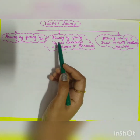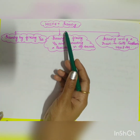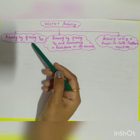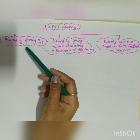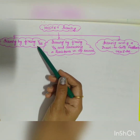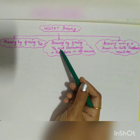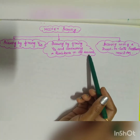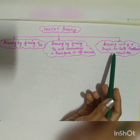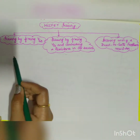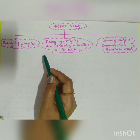The next topic in module 1 is MOSFET biasing. Under MOSFET biasing, you are going to study three different types: biasing by fixing VGS, biasing by fixing VG and connecting a resistance in the source, and biasing using a drain-to-gate feedback resistor.